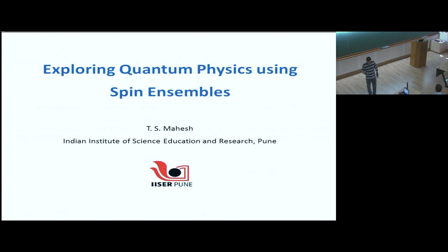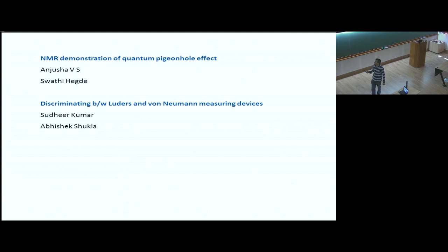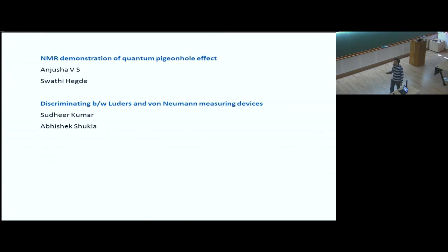Good afternoon. Thank you very much to the organizers for inviting me. I am in between you and your lunch, so let me try to finish a few minutes early if possible. I will be talking about exploring quantum physics using spin and symbols by using NMR, covering two recent works: an NMR demonstration of the quantum pigeonhole effect, carried out by my PhD students Anjusha and Swati Hegde, and discriminating between Lüders and von Neumann measurement devices, carried out by Sudhir Kumar and Abhishek Shukla.